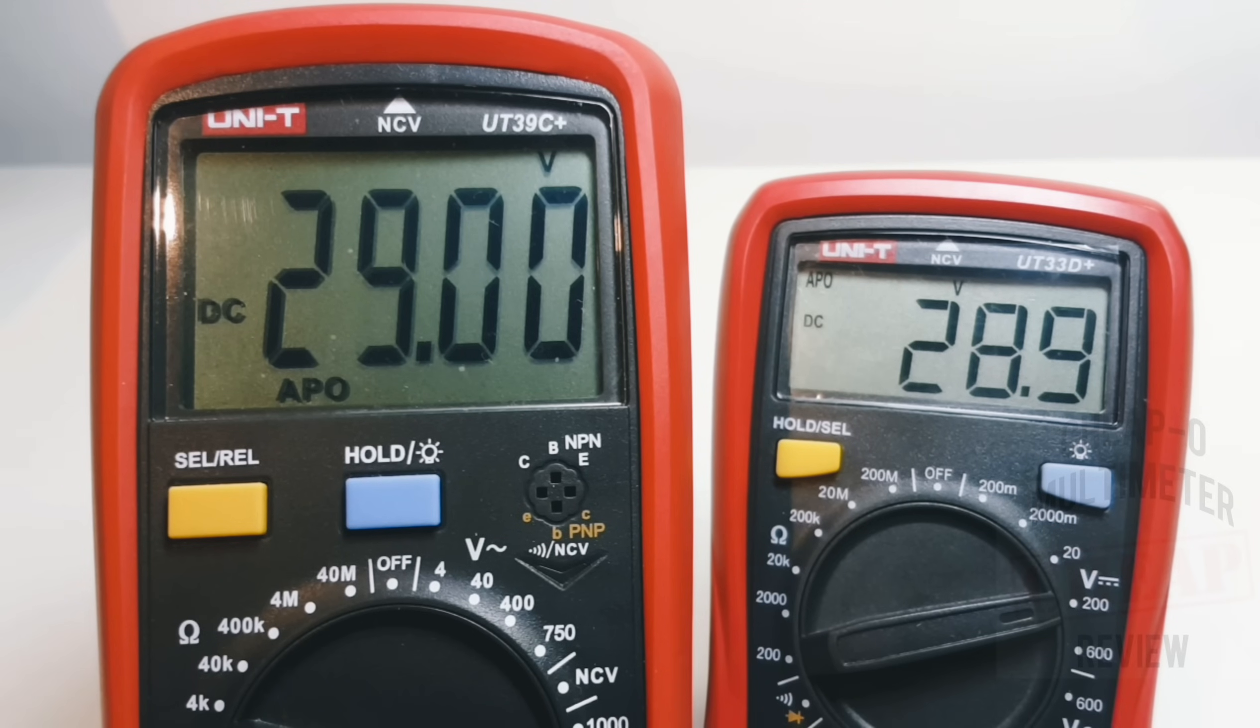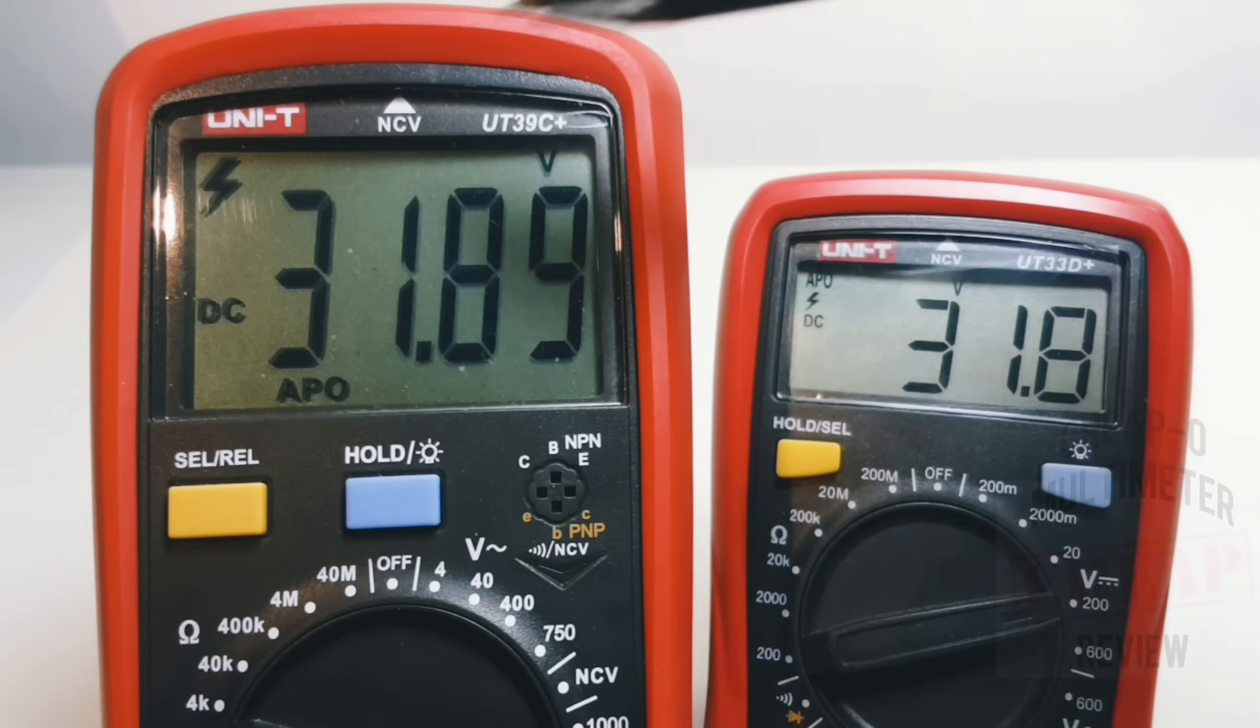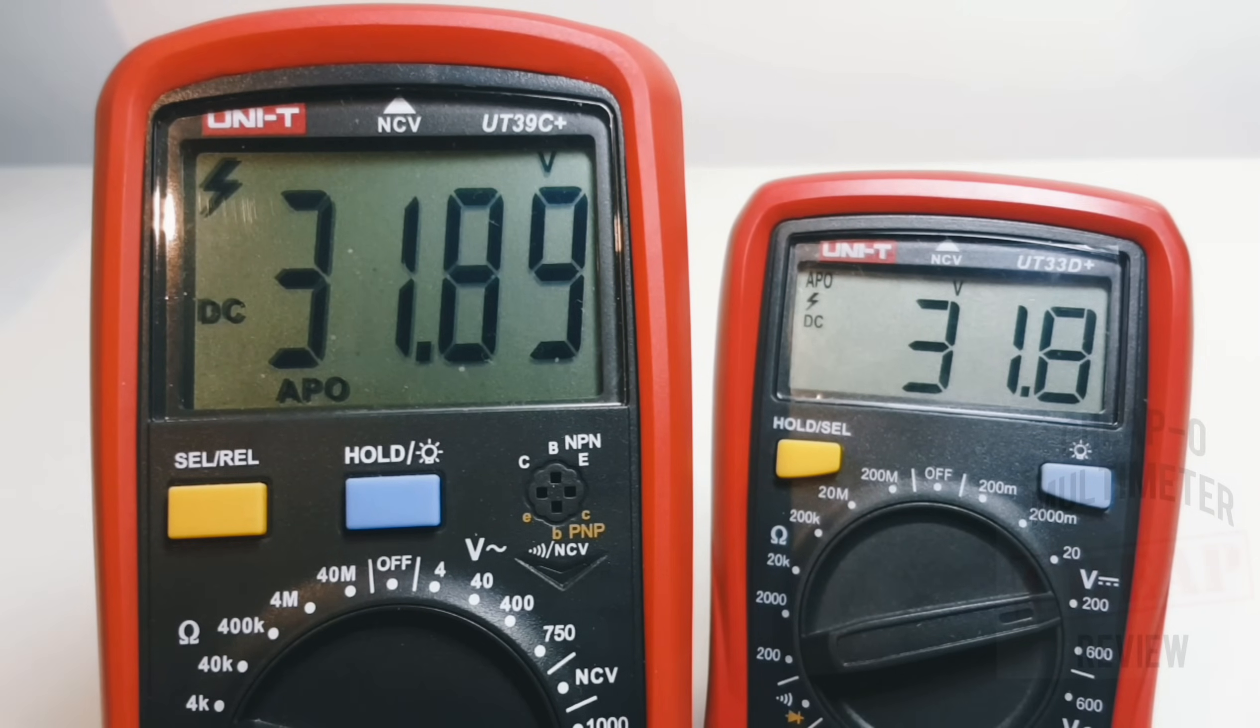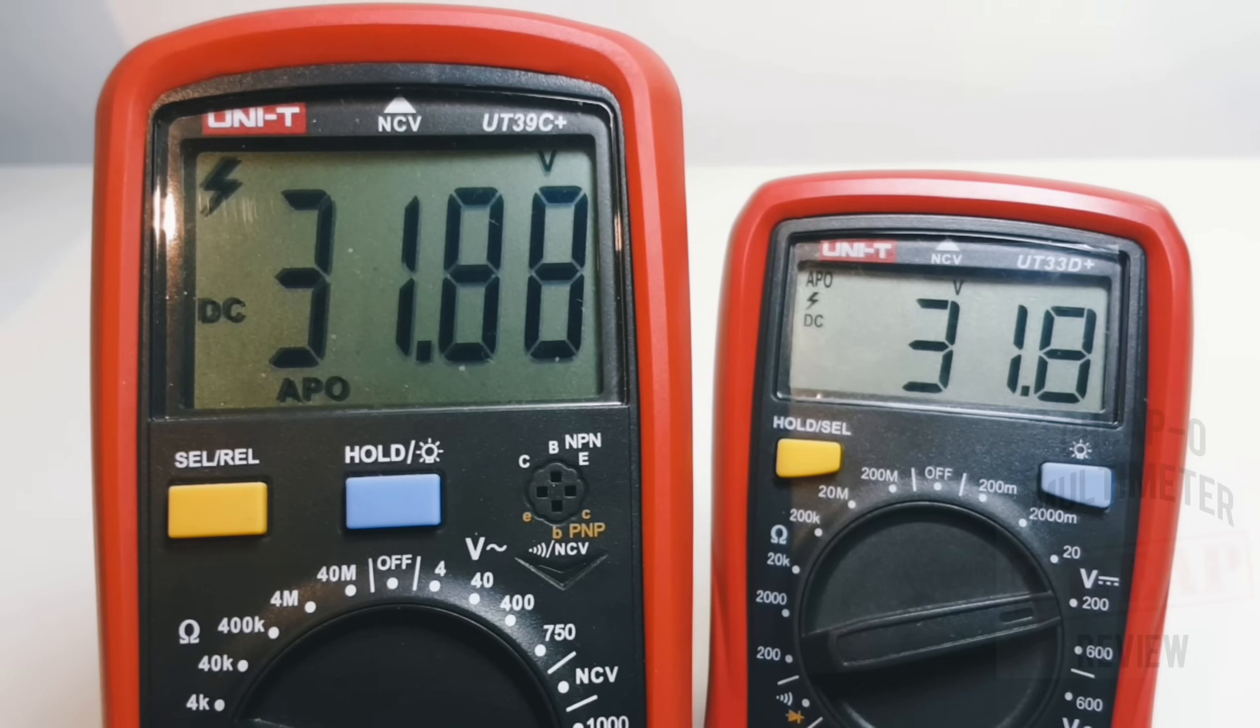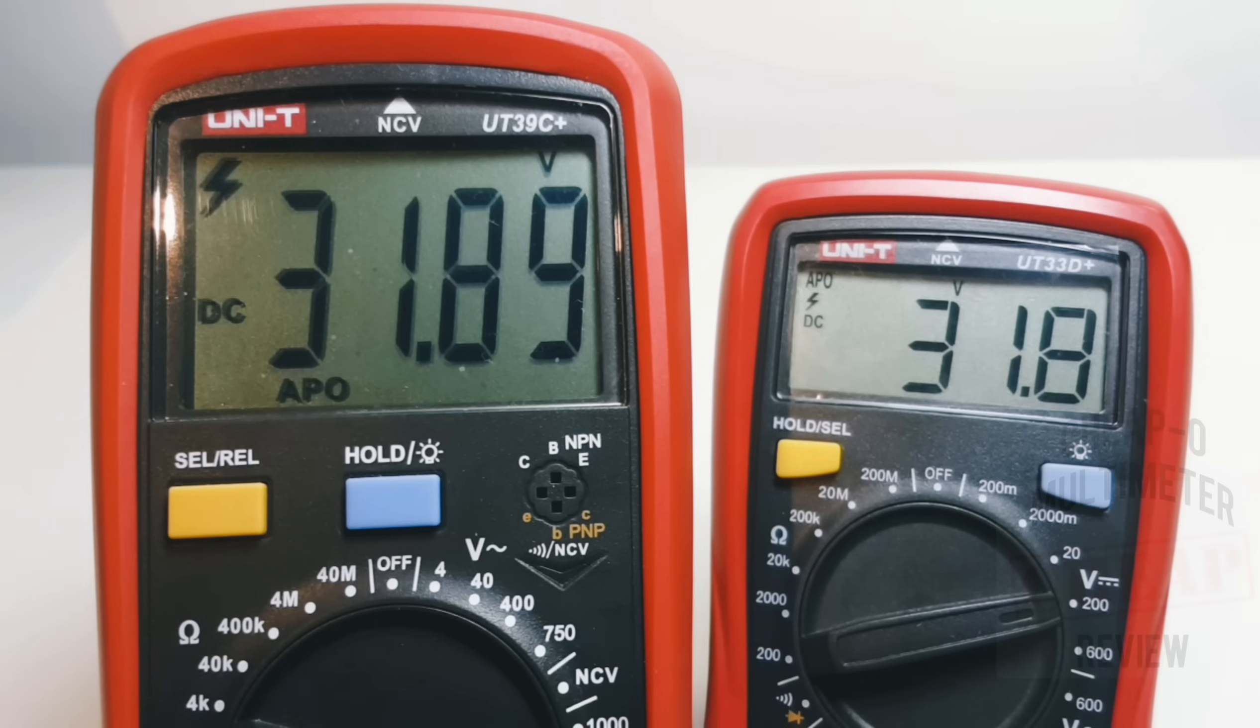Higher yet: 28.8 volts, 28.99. Okay, 29. 29 it is for the 39C+. 28.9 spot on for the 33D+. Finally, we're gonna max it out: 31.7 volts. Now we have the high voltage indicator on both of the meters. 31.88 for the 39C+.